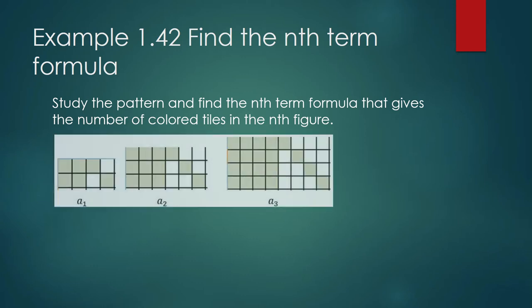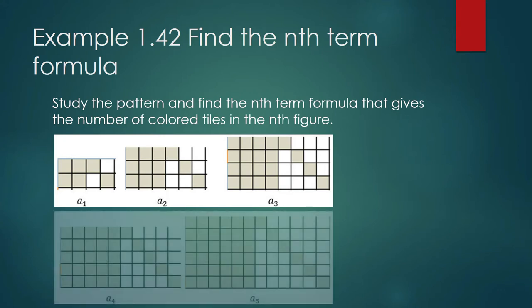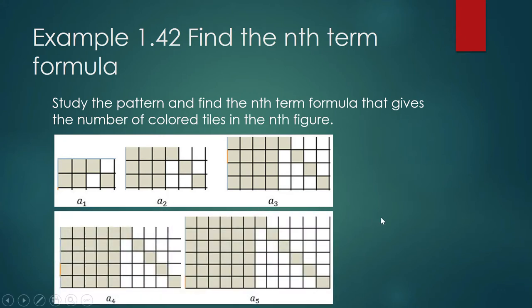We are given a listing of objects and we are interested in the color tiles. We call each of them a term of the sequence. A sequence is a list — in math, it's going to be a list of numbers that follow a pattern.